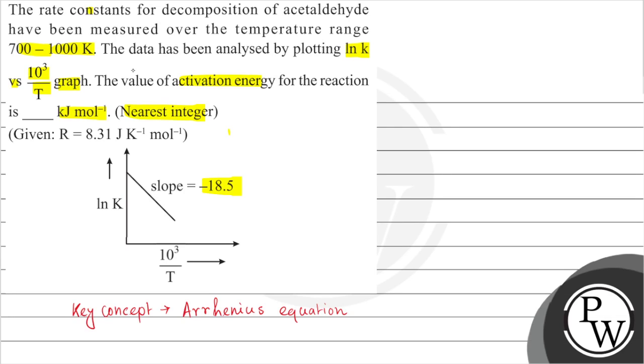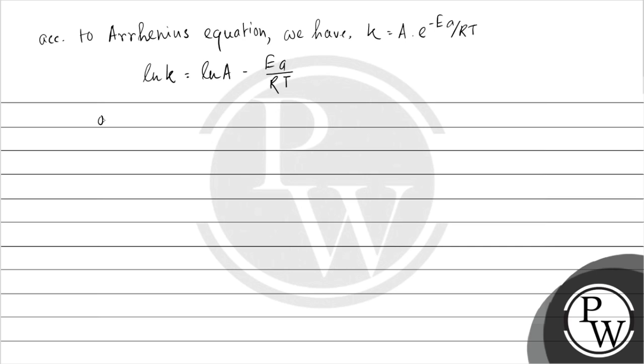But in the question the graph is lnk versus 10 to the power 3 by T plotted. So this is equal to lnA minus Ea by 10 to the power 3 into R into 10 to the power 3 by T.